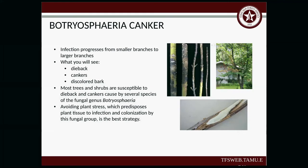Phomopsis canker: the infection progresses from smaller branches into the larger branches. You're going to see some dieback, cankers, and discolored bark. Most trees and shrubs are susceptible to this. What you want to do is avoid plant stress — that's pretty much the theme with a lot of these diseases. Right now trees are very stressed from the drought, from the winter storm, and from that month of May with nonstop rain. We've gone from one extreme to the next. So if you start seeing some weird things, baby them and give them some TLC.